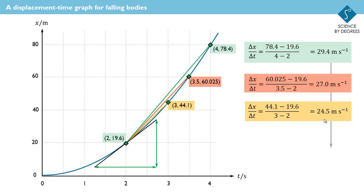And you can see from the graph that as we go from the green line to the red line to the yellow line, the gradients are decreasing and they're becoming closer to the gradient of the black line, which is what we actually want to calculate.